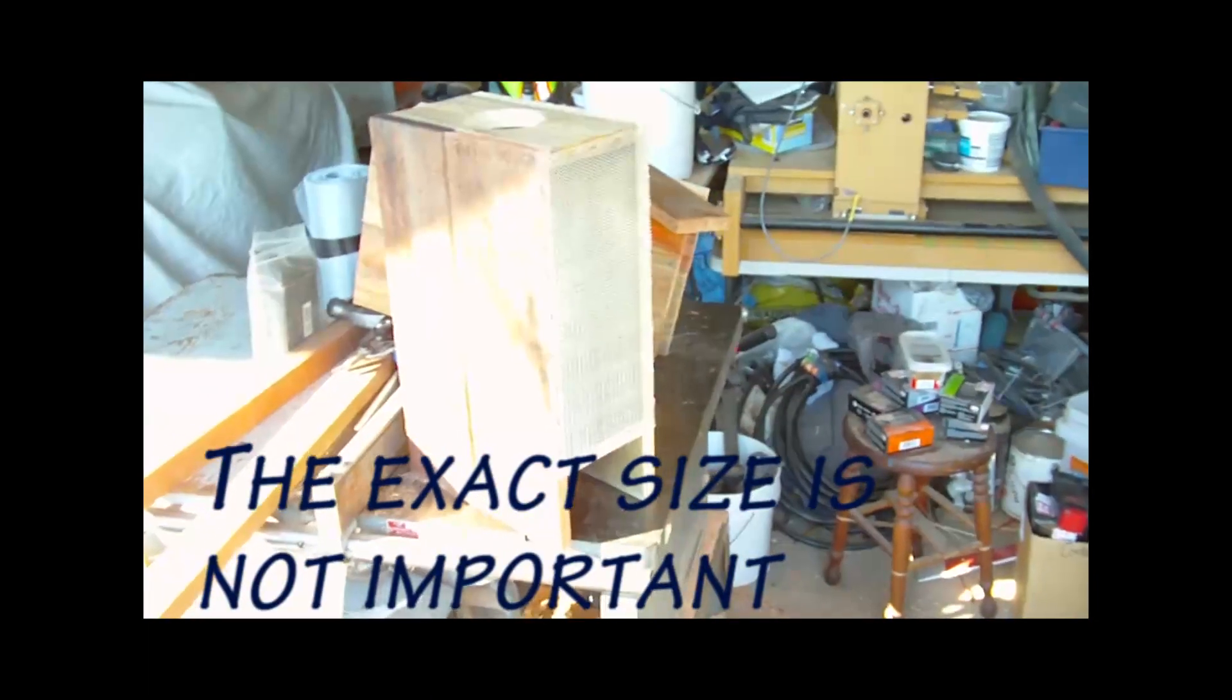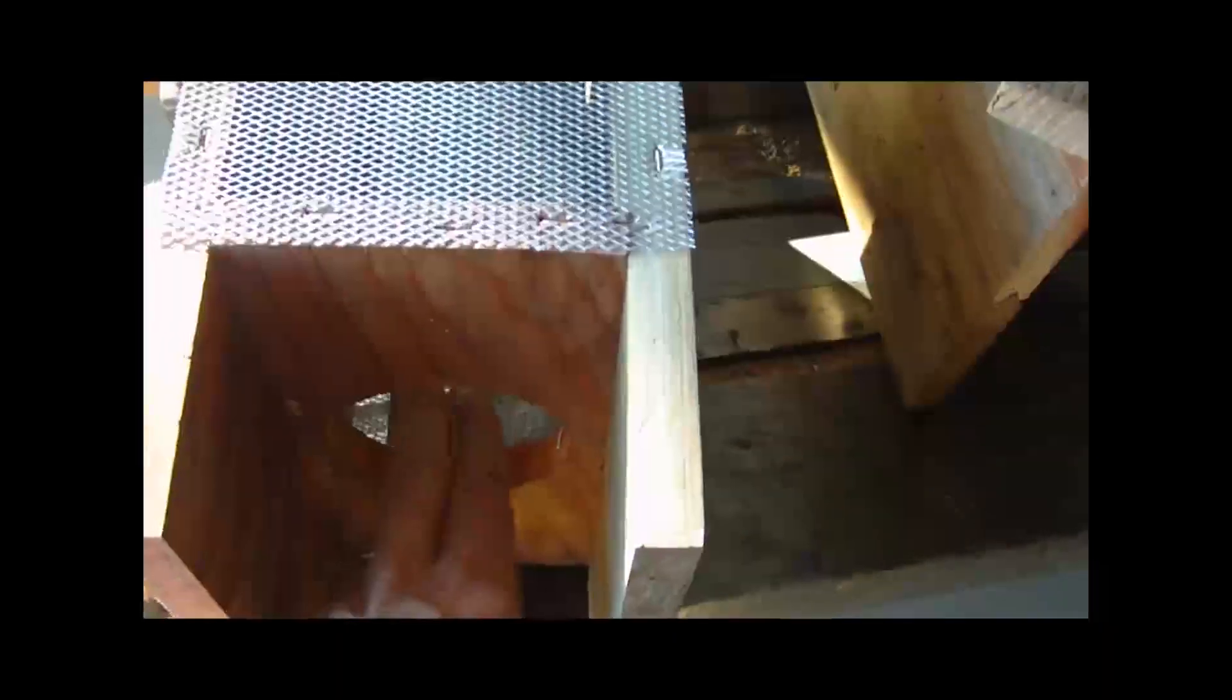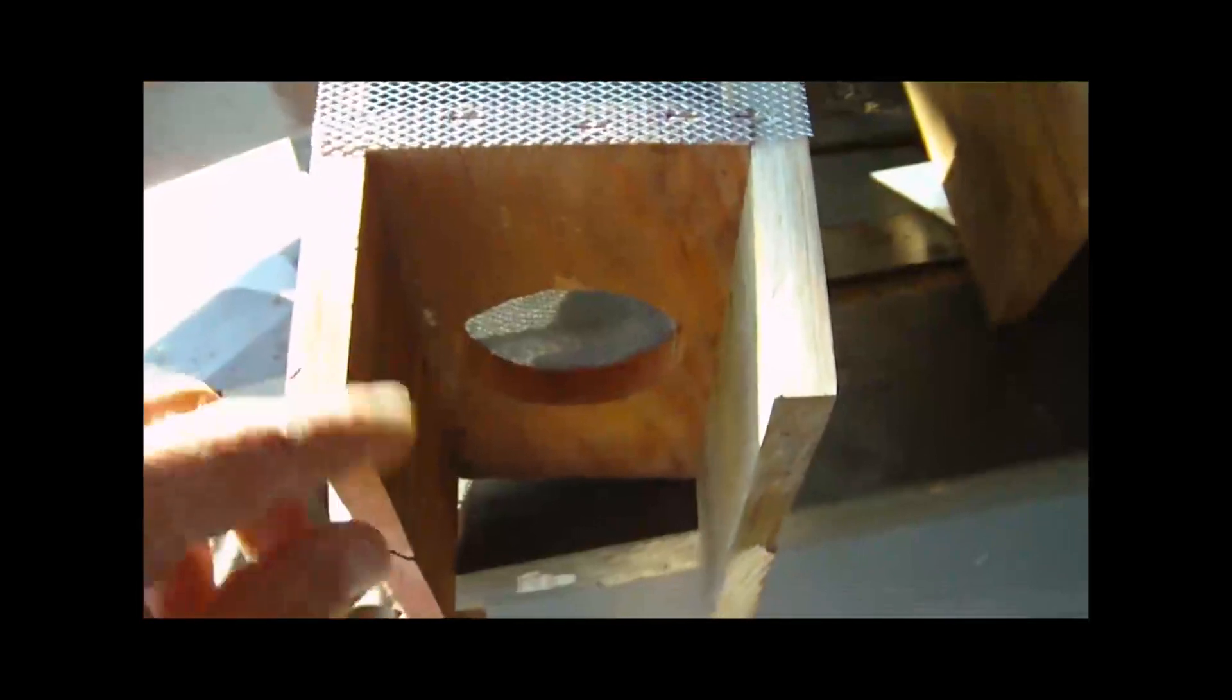Essentially, it's a box that's screened on both sides, and it has a funnel in the bottom and a hole. I'll show you that in a minute. It's got a funnel, and it has these legs that are just a continuation of the sides so that you can set a can of tuna fish underneath here.